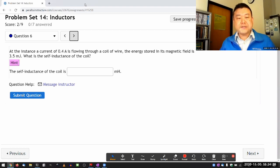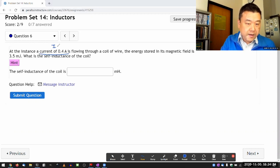So this question is asking, at an instance when certain amount of current is flowing, let me label that I not, through some coil of wire. And instead of giving you voltage or rate of change of current that you've been getting, it's giving you the energy. It's telling you that there's some energy stored in the inductor, and that amount of energy is 3.5 millijoules.